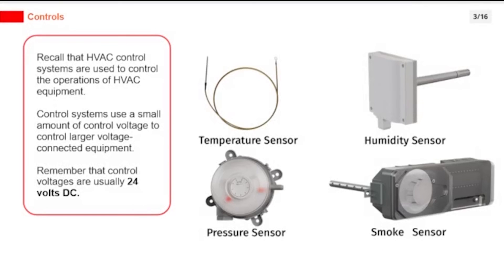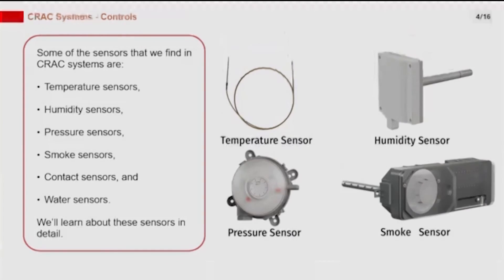HVAC control systems are used to control the operations of HVAC equipment. Control systems use a small amount of control voltage to control larger voltage connected equipment; control voltages are usually 24 volts DC. Some of the sensors found in CRAC systems are temperature sensors, humidity sensors, pressure sensors, smoke sensors, contact sensors, and water sensors.